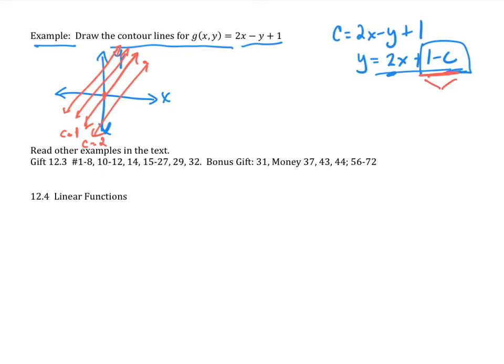This one here would be C equals 2. If I plug in 2 into here, I'm going to get negative 1. That would be my y-intercept here. And then this would be C equals 0, C equals negative 1, and so on.